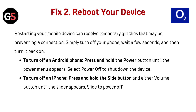Fix 2: Reboot your device. Restarting your mobile device can resolve temporary glitches that may be preventing a connection. Simply turn off your phone, wait a few seconds, and then turn it back on. To turn off an Android phone, press and hold the power button until the power menu appears, then select Power Off to shut down the device.